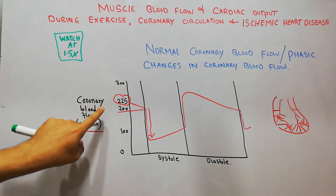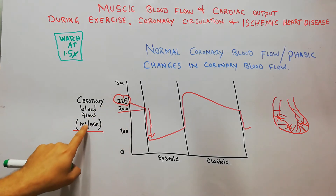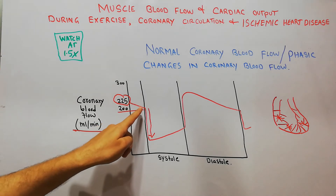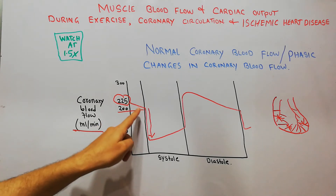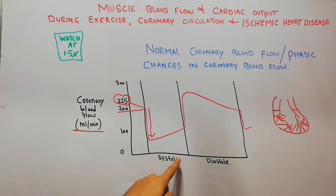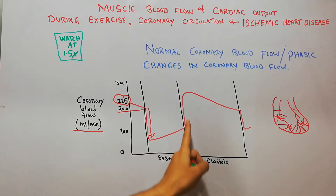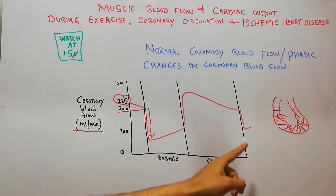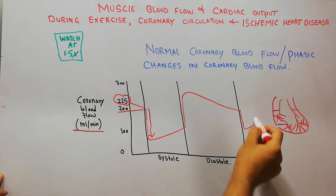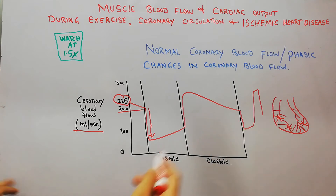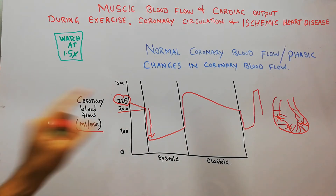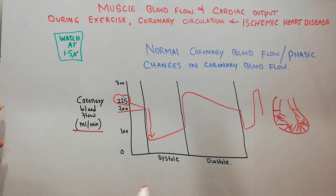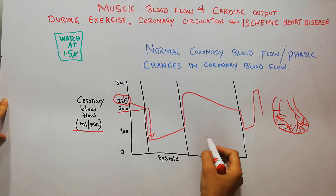Due to this compression, the normal blood flow during systole decreases — this occurs normally even in a healthy heart. The normal coronary blood flow is around 225 ml per minute; it decreases during systole and increases again in diastole, then decreases again in systole and increases in diastole. These phasic changes occur even in normal coronary blood flow.